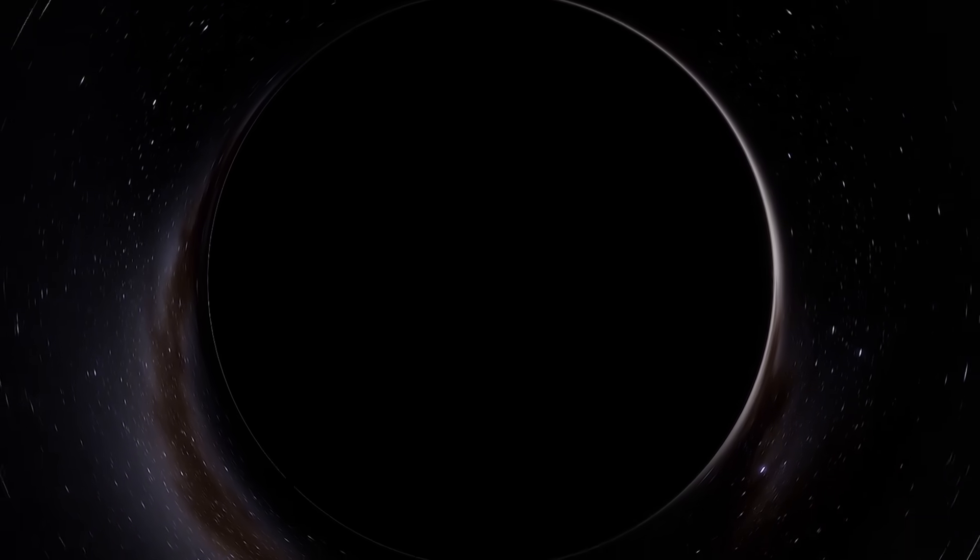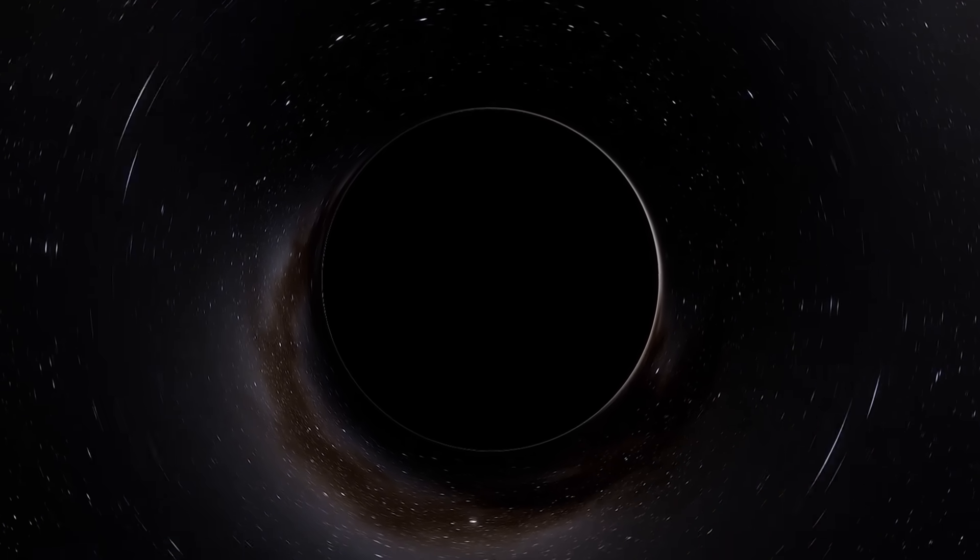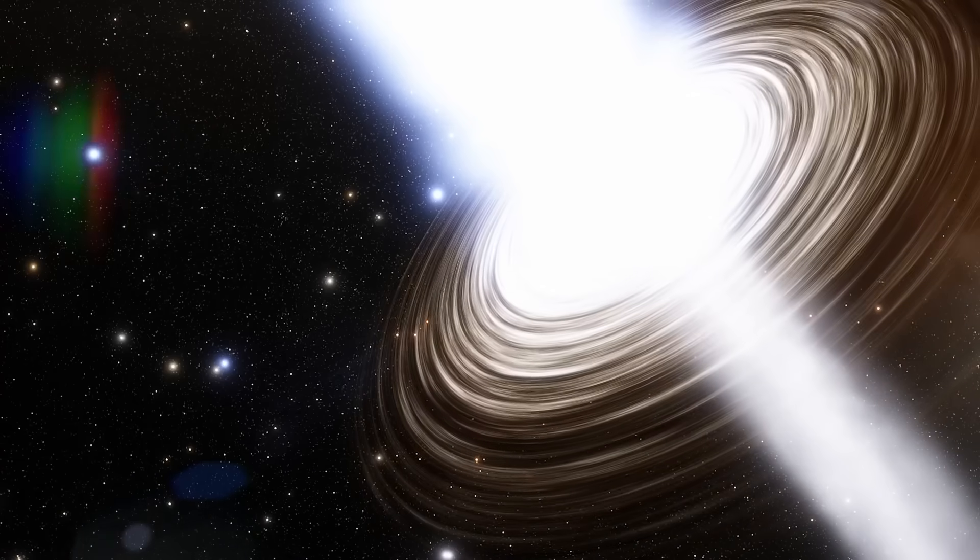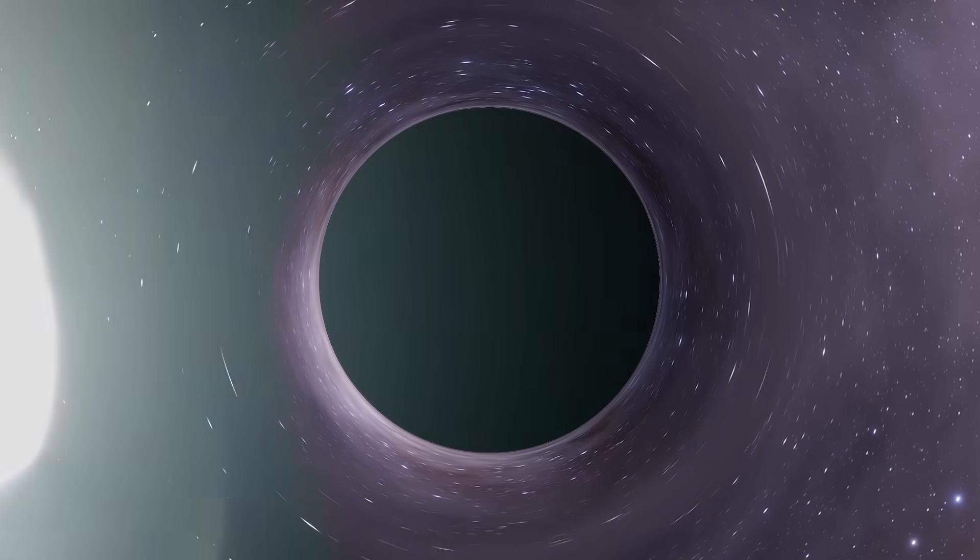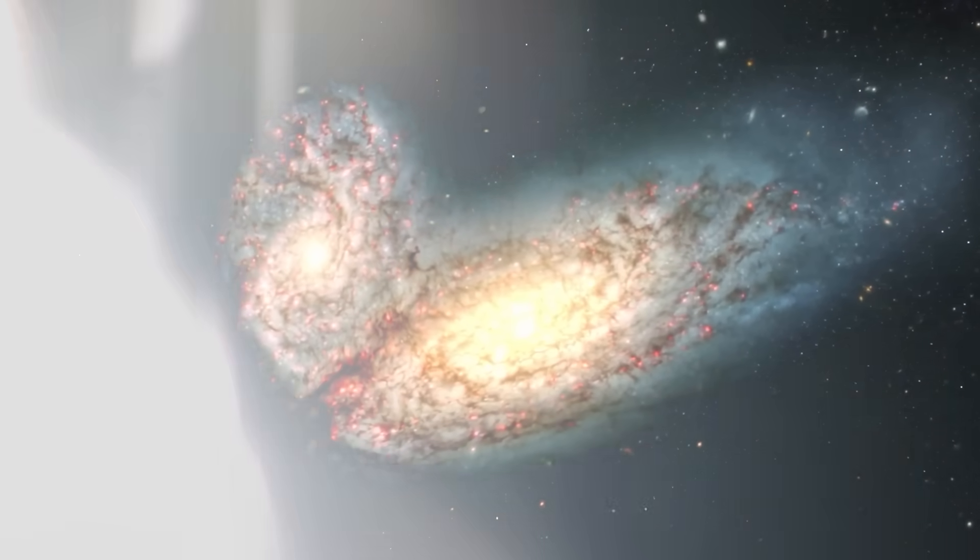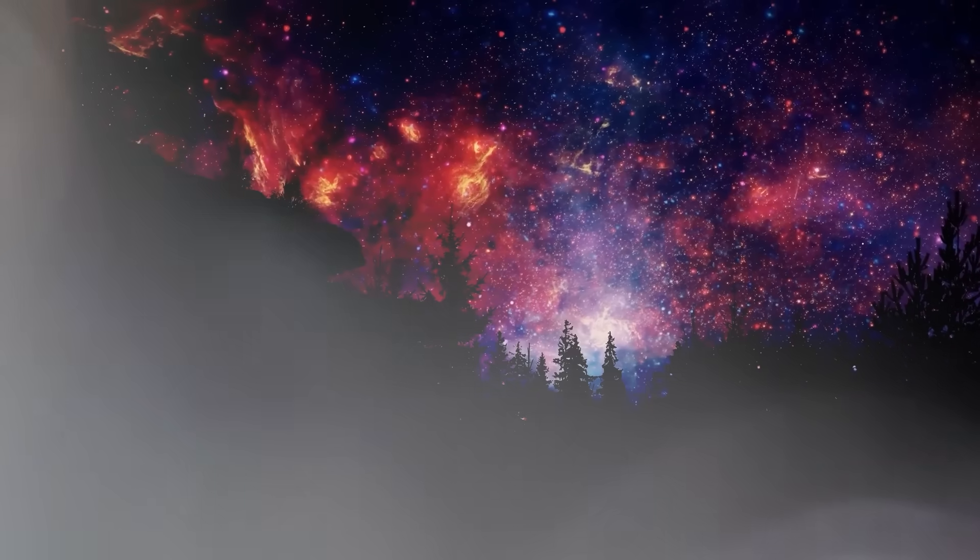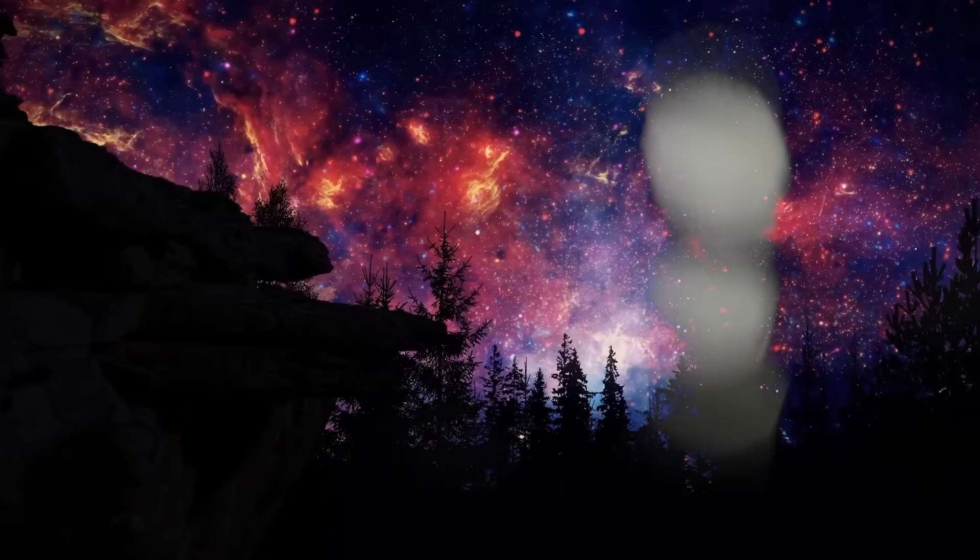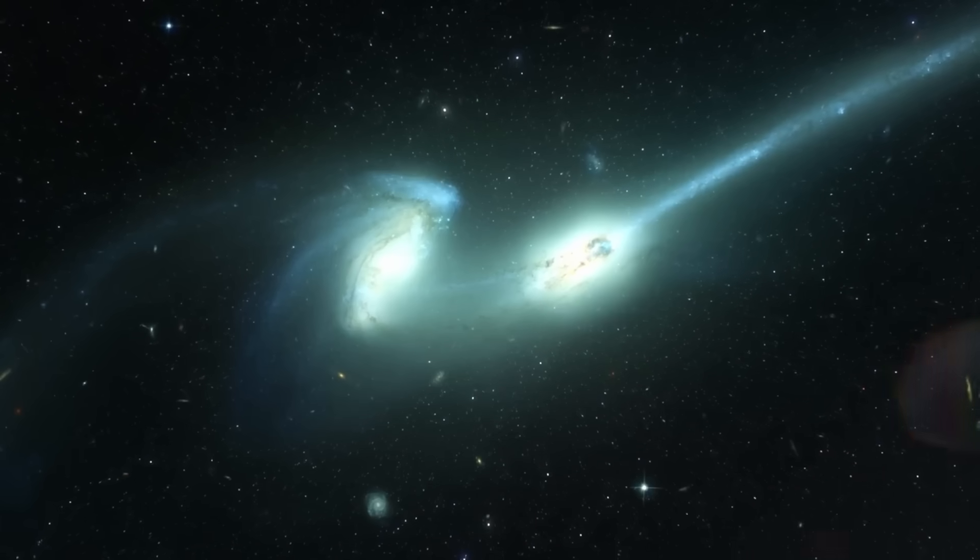One of the most unnerving implications of Webb's discoveries is that time, the most taken for granted dimension of our universe, may not be uniform. The galaxies Webb observes don't just appear too massive or too bright, they seem to evolve faster. In some cases, their stellar populations appear to be older than the universe itself was at that point in history. That's not just a red flag, that's a cosmic alarm bell.